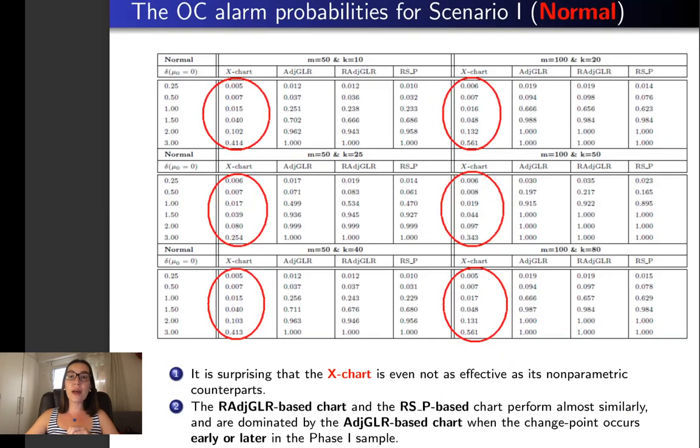As for the out-of-control scenario under a normal distribution, it is surprising that the X-chart is not as effective as its non-parametric counterparts which perform almost similarly and satisfactorily.